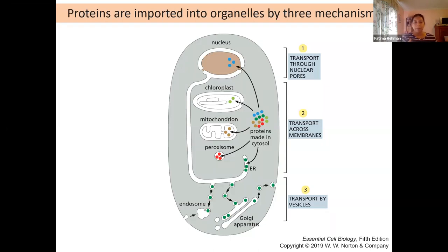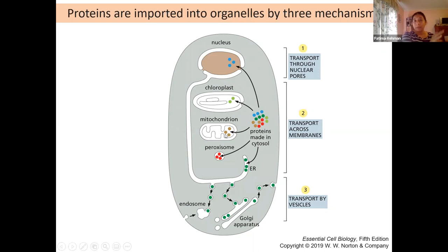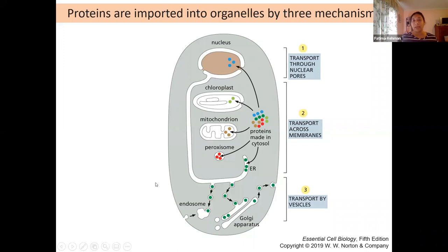Other times, proteins are going to be built on ribosomes studded on the ER because they need to be modified and moved to a specific place. Some proteins built in the cytosol still need to be translocated somewhere else — they could be part of your nucleus, meaning they have to be transported through the nuclear pore. They could be part of the chloroplast or the mitochondria as well. While chloroplast and mitochondria make some of their own proteins, there are still proteins made in the cytosol that need to get into those systems.